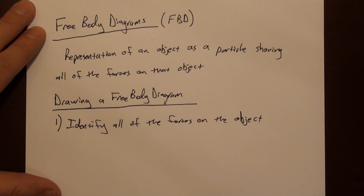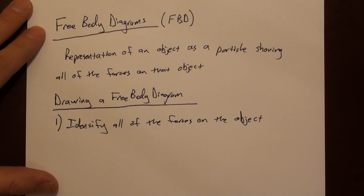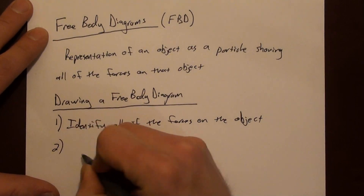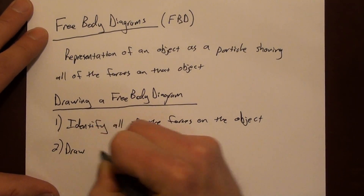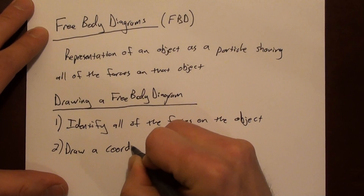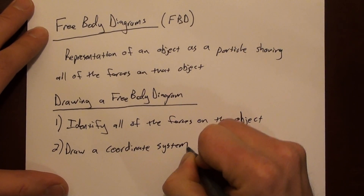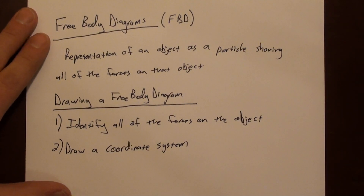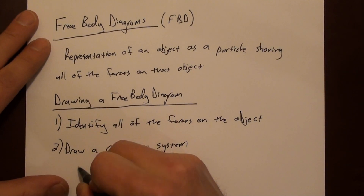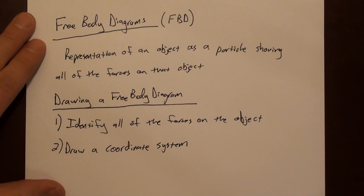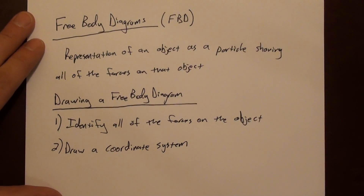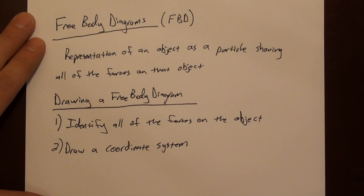Drawing a picture of the situation is a great way to start — looking at contact and non-contact or long-range forces. Step two is to draw a coordinate system, choosing x and y. This can be tilted.